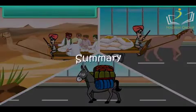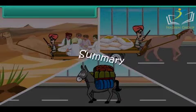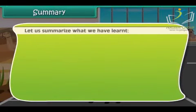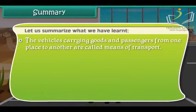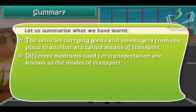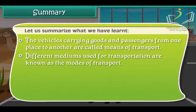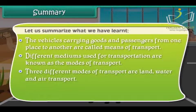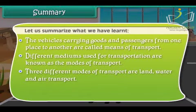Summary — let us summarize what we have learned. The vehicles carrying goods and passengers from one place to another are called means of transport. Different mediums used for transportation are known as the modes of transport. Three different modes of transport are land, water and air transport.